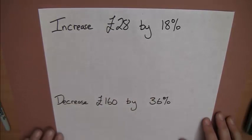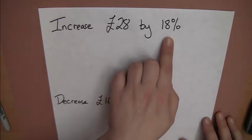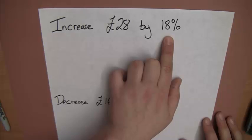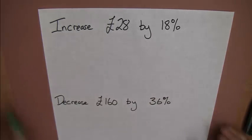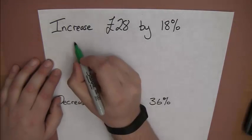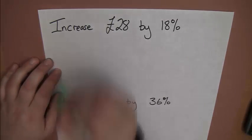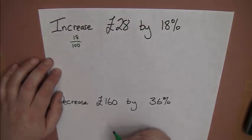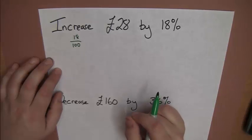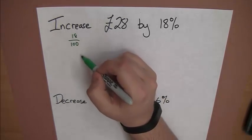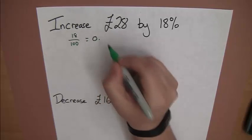We've got increase £28 by 18%. Now, first of all we need to know what 18% is as a decimal. So, let's think about that, 18% as a decimal. Well, 18% means the same thing as 18 divided by 100, or 18 out of 100. Percent out of 100. So, with that percent we can work this out. 18 over 100, that's 0.18.